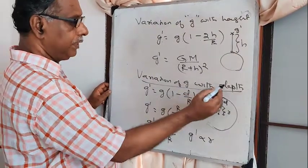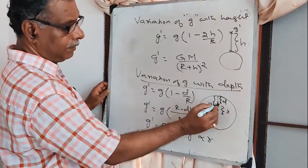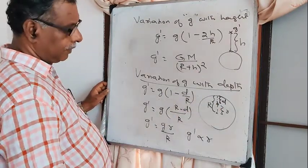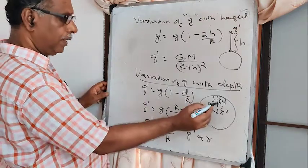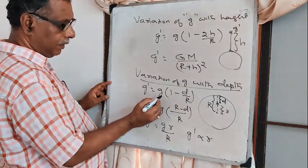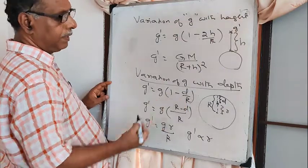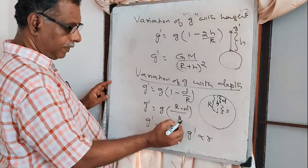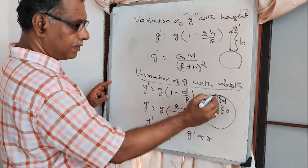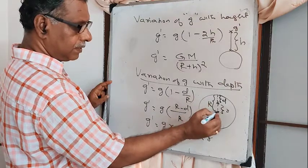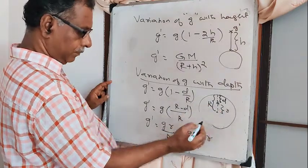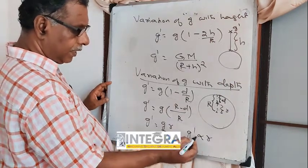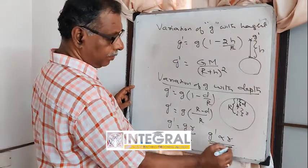For the variation of g with depth: at a depth D from the surface of the earth, g' = g·(1 − D/R). This simplifies to g' = g·(R − D)/R, where (R − D) is the distance from the center. Therefore g' is proportional to R — that is, g is proportional to distance from the center.